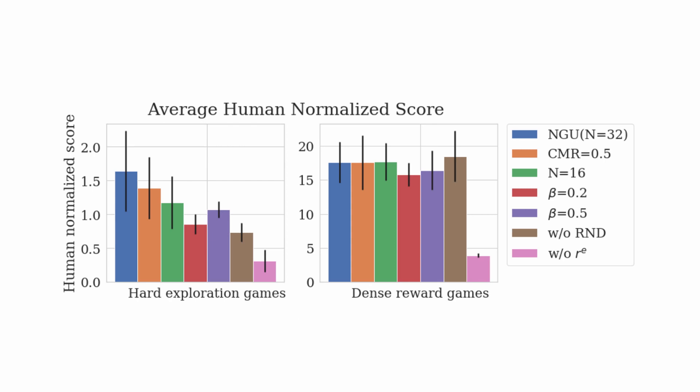Additionally, on dense reward games, we can appreciate the robustness of the algorithm also with different hyperparameters. By the way, the N is the number of exploratory value functions approximated by the UVFA.